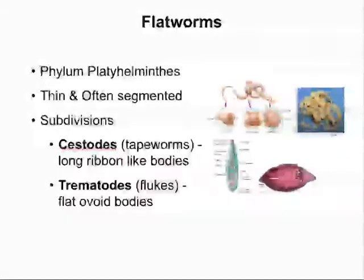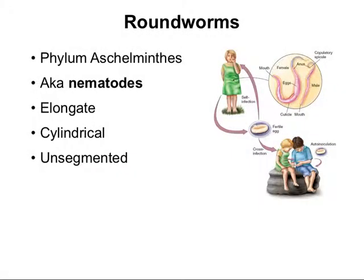The other group is the nematodes, or roundworms, in the phylum Aschelminthes. In contrast to the flatness of flatworms, nematodes are round in body shape — long, cylindrical, and unsegmented. All of these worms can range from just a couple of millimeters to meters in length. Tapeworms have been found up to 25 meters in length. We'll look at these in much more detail as we address the various systems infected by these parasites.